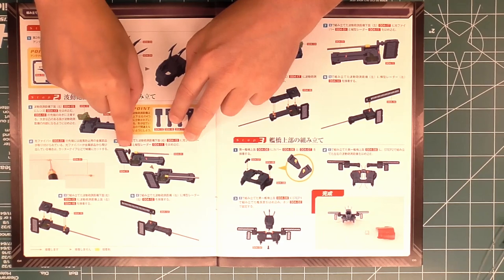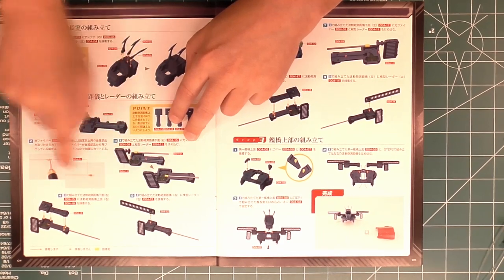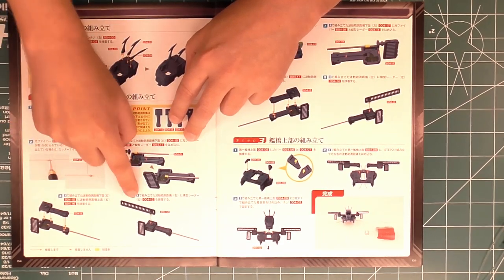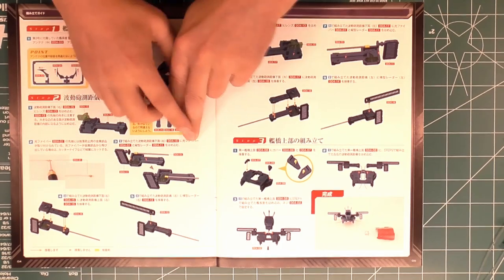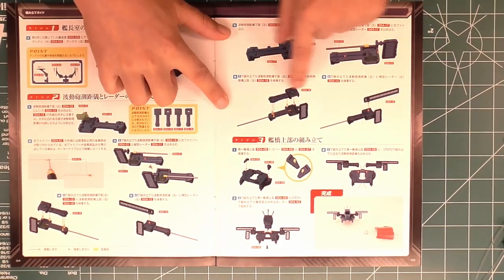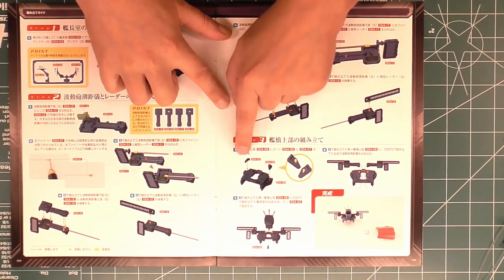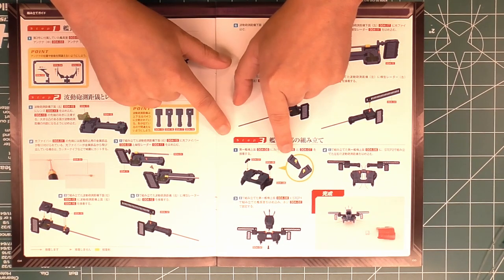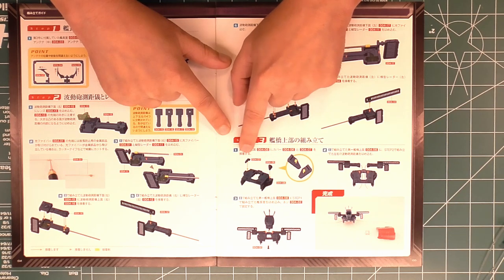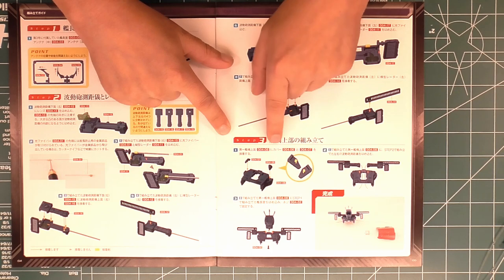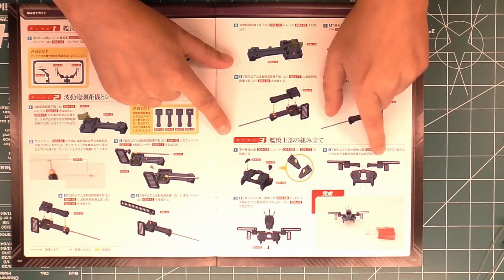These are the radar. I believe they're radar. They go on the top of the superstructure. Same thing with the other side. I had the same problem. So then we cut these gray beads off the sprues, glue them into the right place with some super glue.